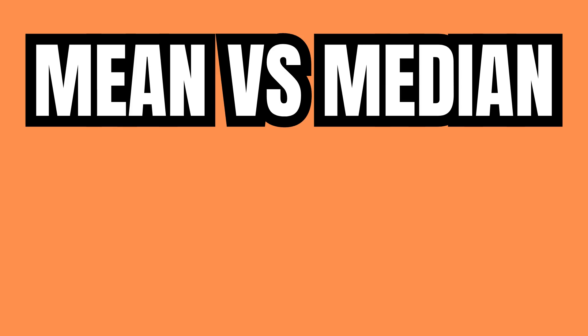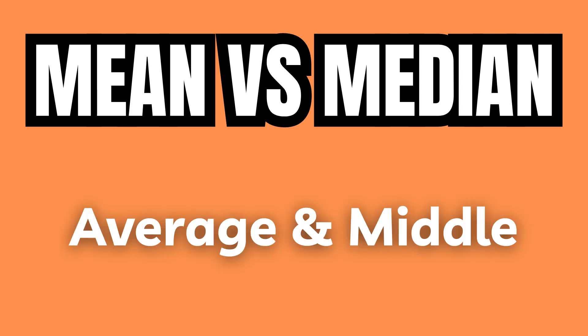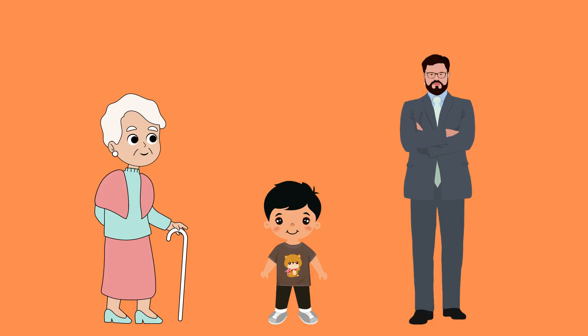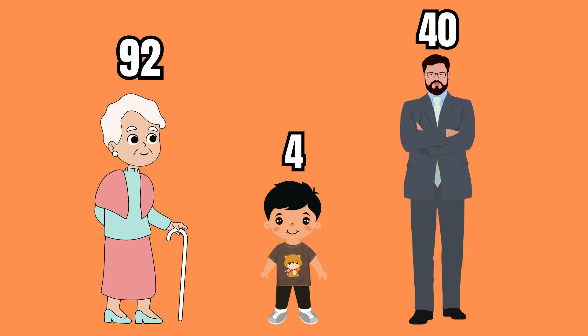The difference between the mean and median can be explained by considering the age of three different people. Let's consider an old woman of age 92, a small child of 4, and a middle-aged man of 40.